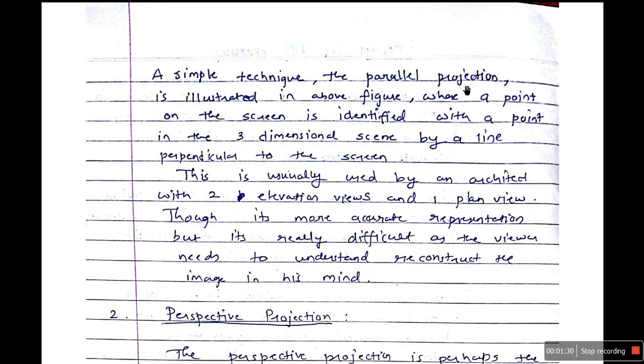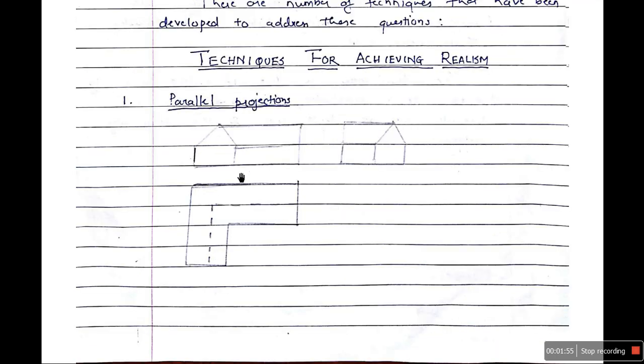A simple technique, the parallel projection is illustrated in the above figure, where a point on the screen is identified with a point in three-dimensional scene by a line perpendicular to the screen. This is usually used by an architect with two elevation views and one plane view. So it's more accurate representation, but it's really difficult as the viewer needs to understand and reconstruct the image in his mind. Though it is very much accurate, if you are an engineer, you must have learned engineering drawing in which we used to draw similar images, but it's really complicated. The image looks really complicated.